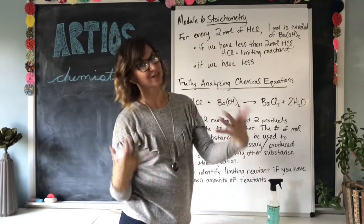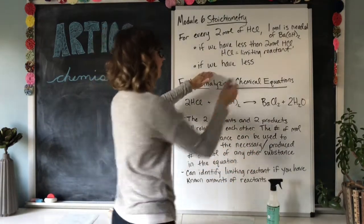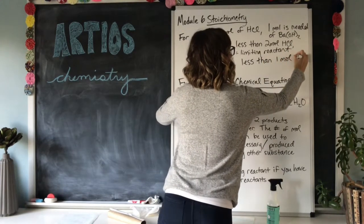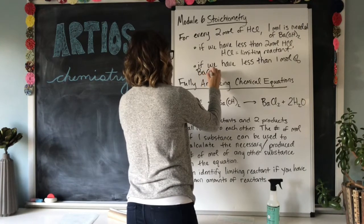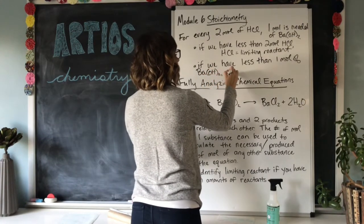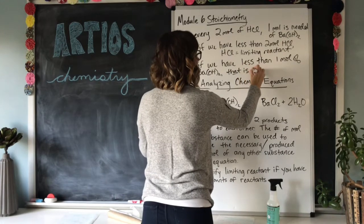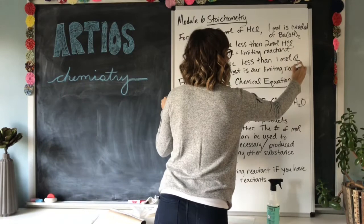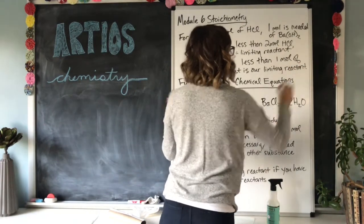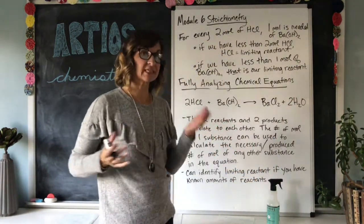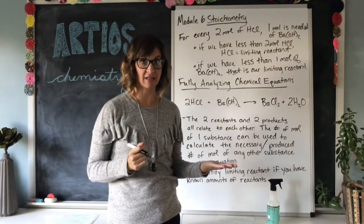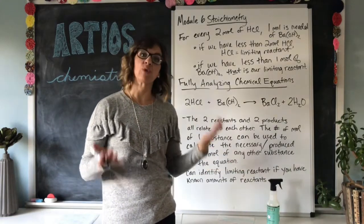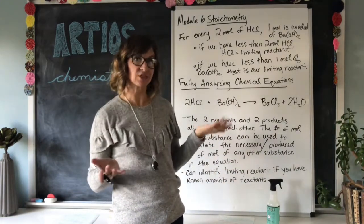If we have less than one mole of BaOH₂, that is our limiting reactant. Basically, you have to remember the proportion — you have to have twice as much HCl as you have of your BaOH₂. Whatever one you don't have quite enough of, that's your limiting reactant.